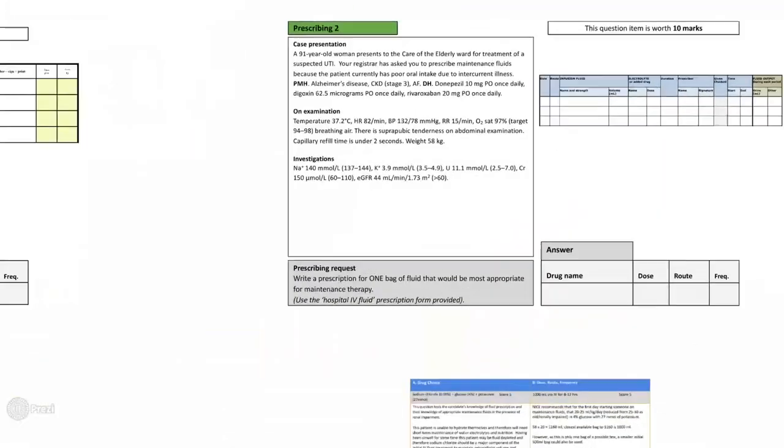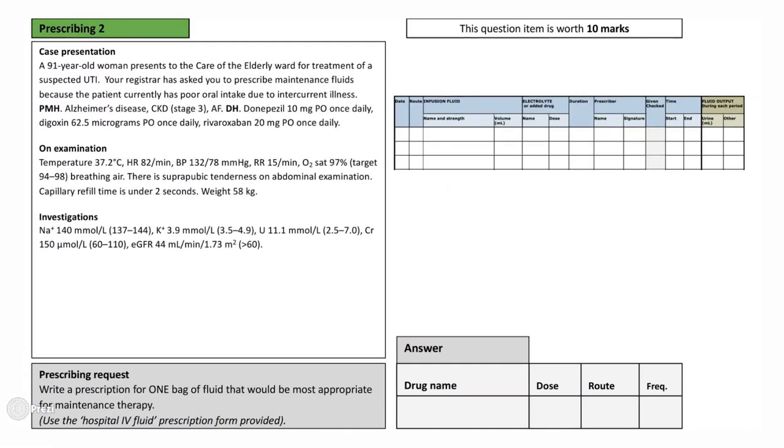So now let's move on to Question 2. This is a 91-year-old woman who has been admitted to care of the elderly for treatment of a suspected UTI. You've been asked to prescribe maintenance fluids because she currently has poor oral intake due to intercurrent illness. She weighs 58 kilograms and has a history of Alzheimer's disease, stage 3 chronic kidney disease, and atrial fibrillation. She takes the medications donepezil, digoxin, and rivaroxaban. On examination, she has a normal temperature, a heart rate of 82, and a blood pressure of 132 over 78. Her respiratory rate is 15 and her oxygen saturation is 97% on room air. On examination, there is suprapubic tenderness and her capillary refill time is under two seconds.